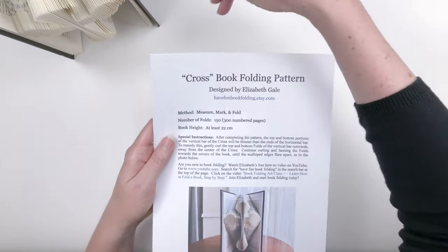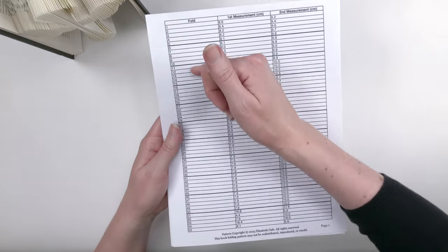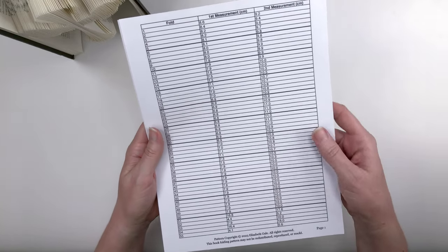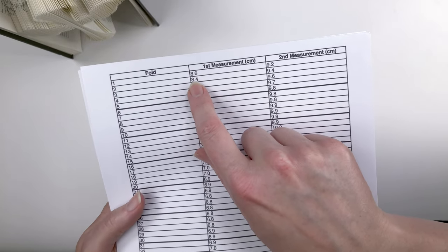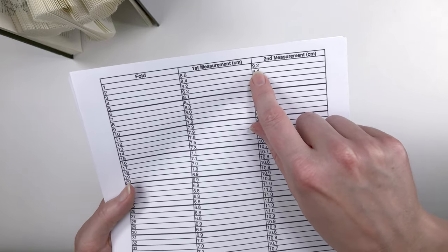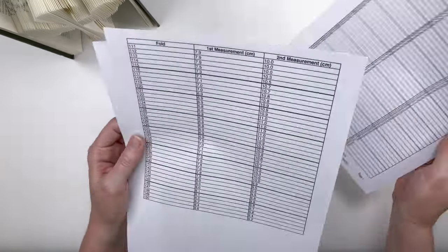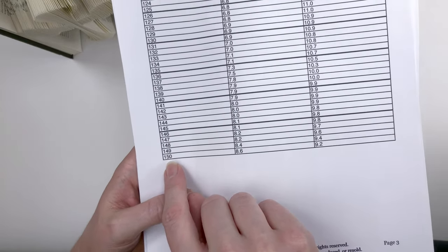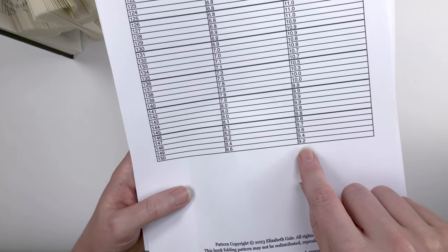Let's go to the next page of the pattern. You can see that it's the typical table of measurements that you'll be working through, where one line in the pattern equals one page in your book. If we look at fold number one, you see it has a first measurement of 8.6 centimeters and a second measurement of 9.2 centimeters. Then the pattern continues all the way up through fold number 150 right there, which repeats the measurements of fold number one, 8.6 and 9.2 centimeters.